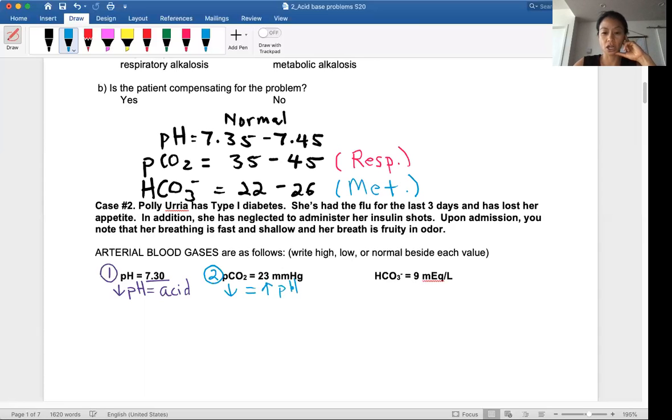The last thing we're going to look at is the bicarbonate. The bicarbonate here is nine, so that's much lower than what is normal of 22 to 26. So low bicarbonate is equivalent to low pH. Respiratory is opposite, metabolic is equivalent, so that mnemonic is ROME. Low pH is acid.